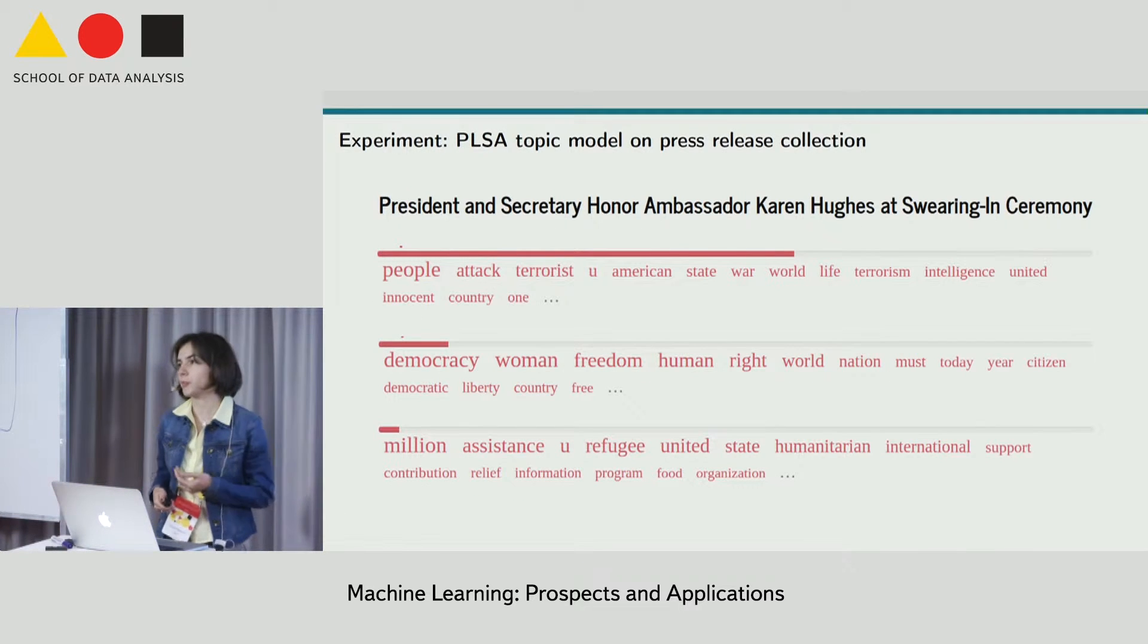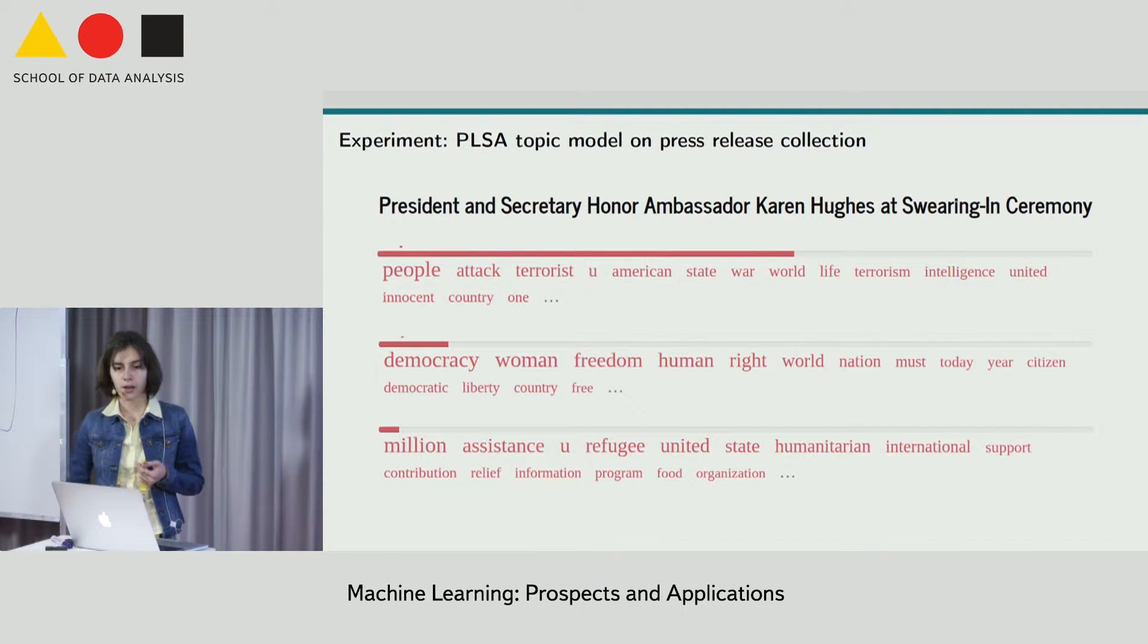Let's see how the results of topic modeling look like. This is a topic model PLSA, a basic topic model for a collection of political statements, and this is just one document with its three most probable topics according to the model. The first topic contains with the highest probabilities these terms about terrorism and attacks. The second one is about democracy and human rights, and the last one is about assistance.